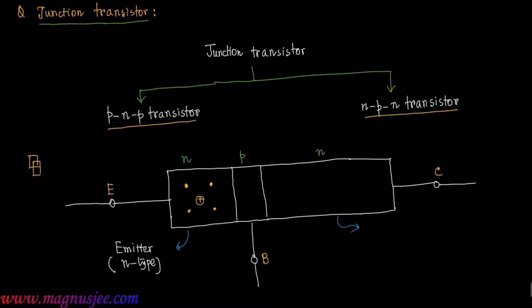This is the collector, which is also N-type. In the N-type collector, the majority charge carriers are conduction electrons, and holes are the minority charge carriers.